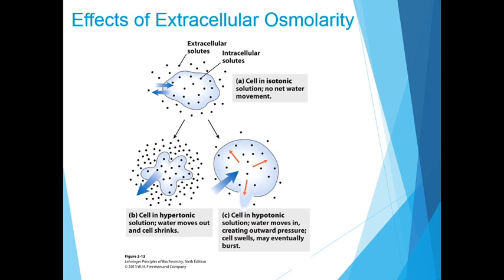This slide shows an example of a cell in isotonic, hypertonic, and hypotonic solutions. In an isotonic solution, there is no net water movement. In a hypertonic solution, water moves out and the cell shrinks, because the cell has a higher osmolarity than the surrounding solution. In a hypotonic solution, water moves in, creating outward pressure, and the cell swells and may eventually burst, because the cell has a lower osmolarity than the cytosol. This is why cells must be kept in isotonic solutions.